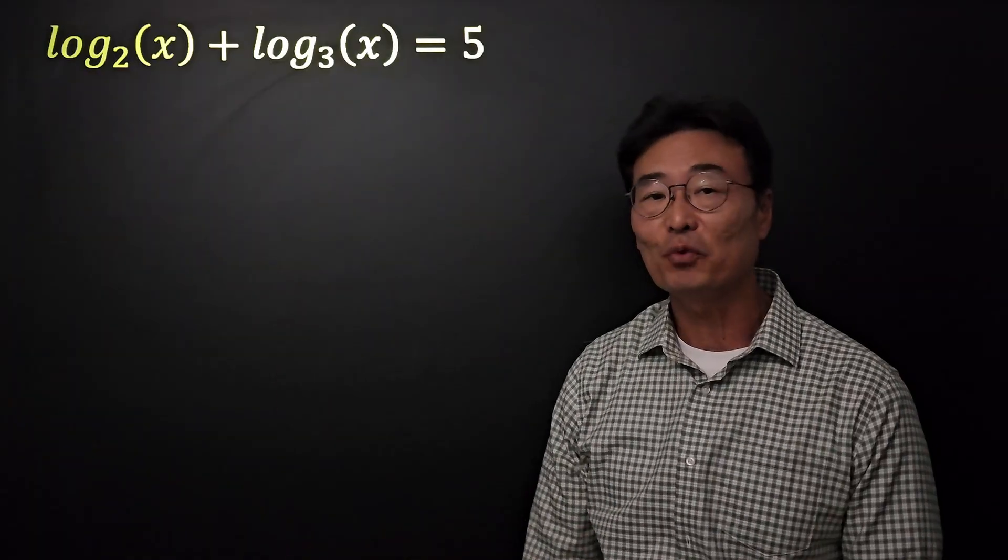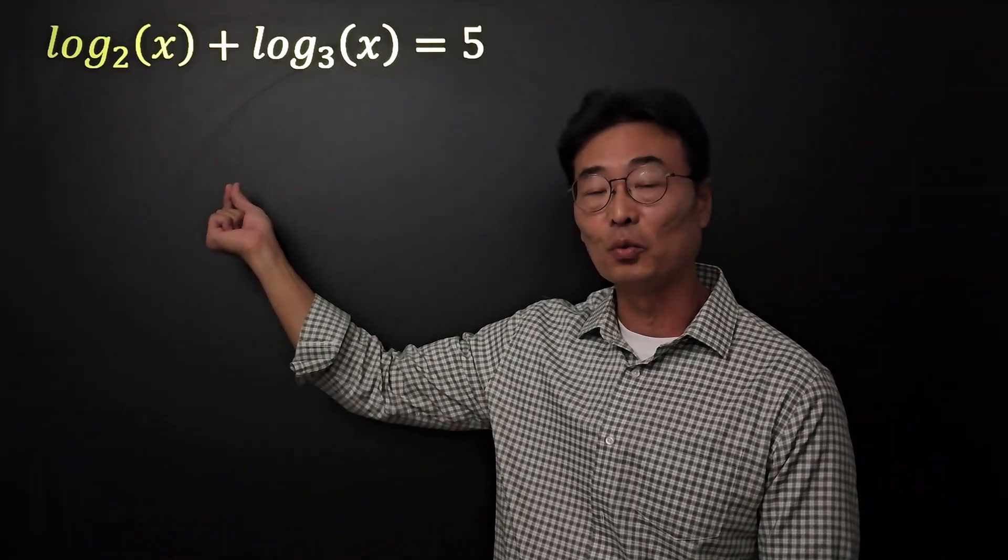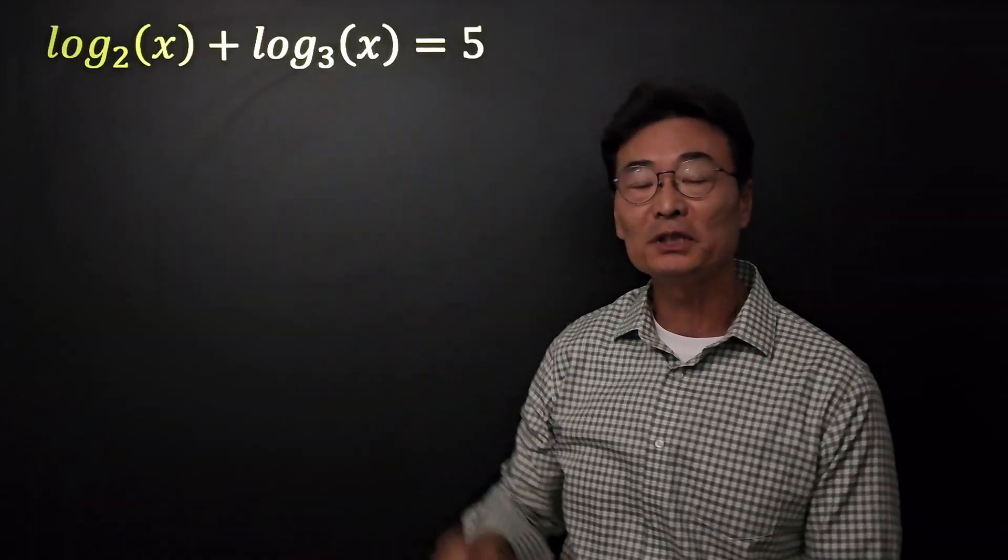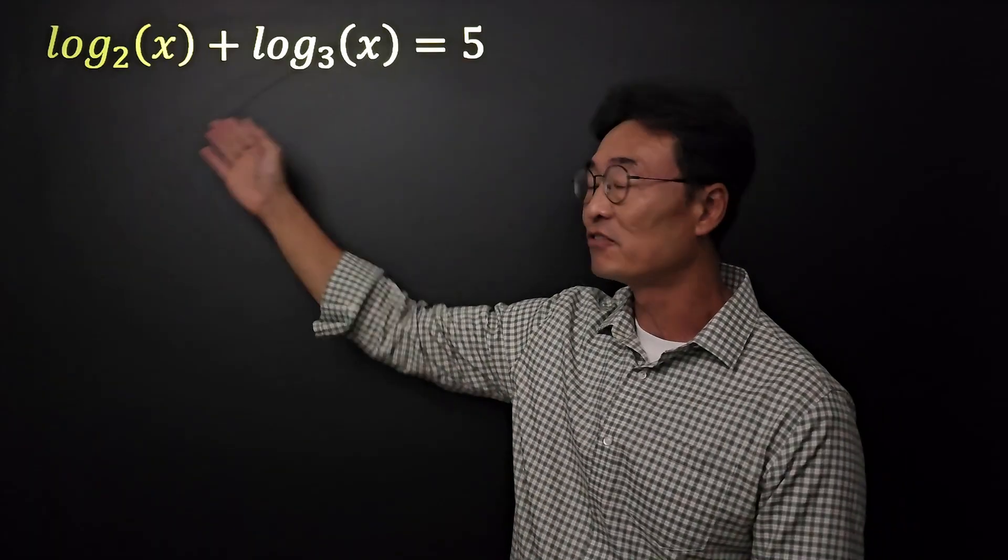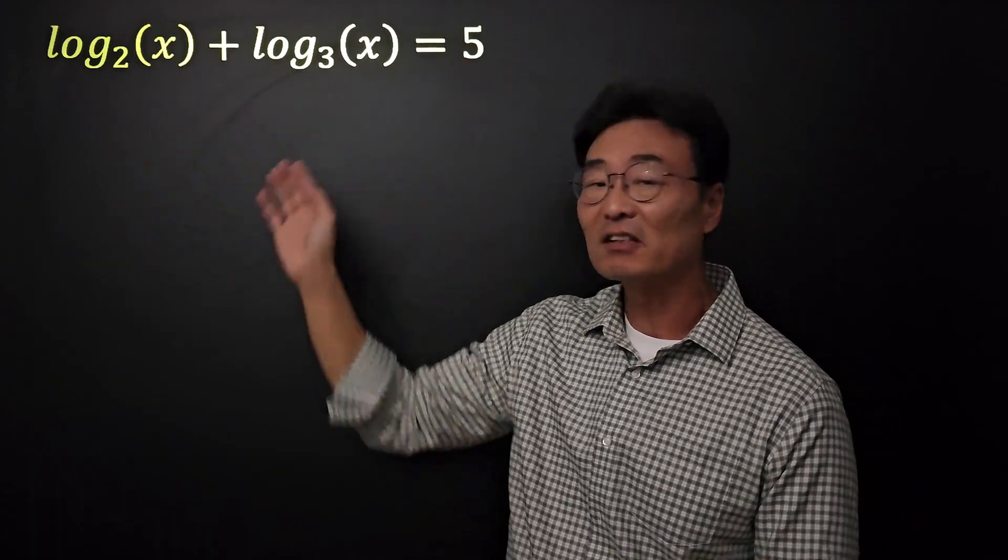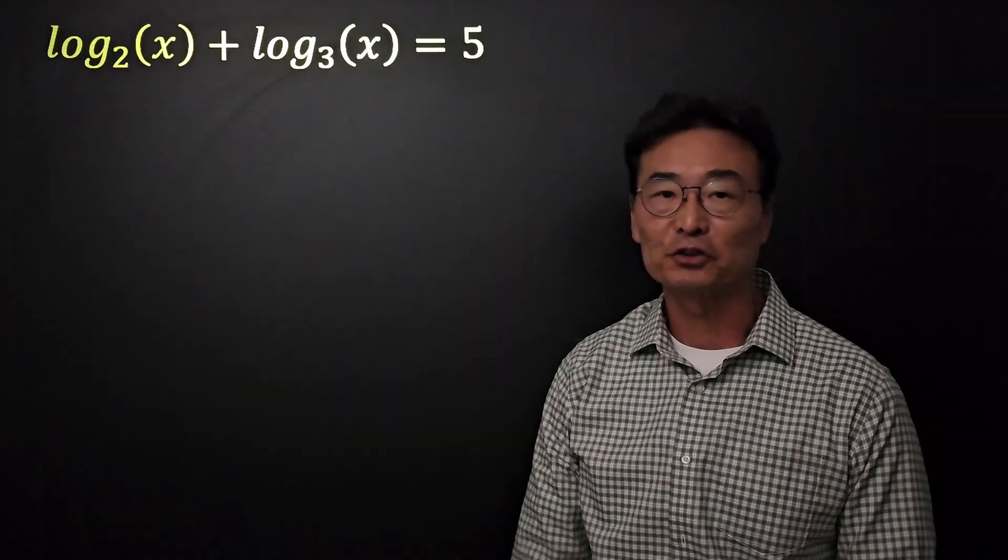If the bases were the same, we could just combine the two logs into one and multiply the arguments and solve for the value of x. It's not that hard if the bases were the same. However, when the bases are different, we have to go through some extra process.